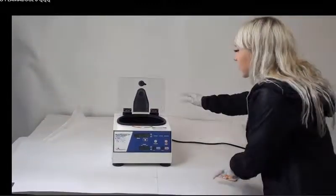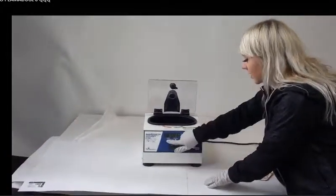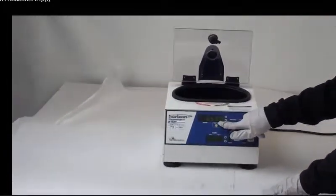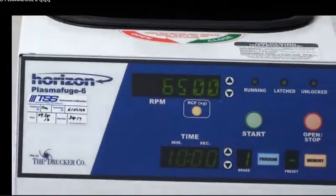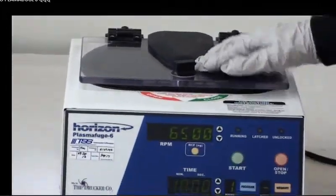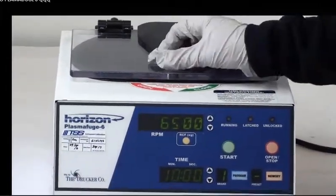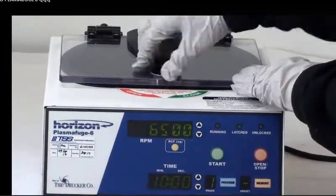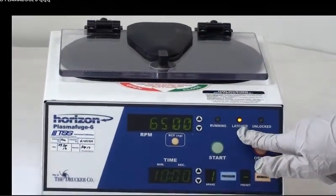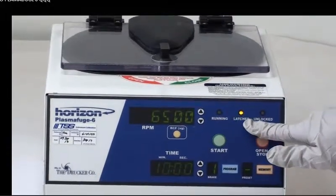I'm going to start off the demonstration by having you see that you can do it at the highest RPM, which is 6500. I'm going to get this ready to show you how it works. I'm going to put down the latch, make sure that it is closed, and you'll see that it is by this light right here under the latch.